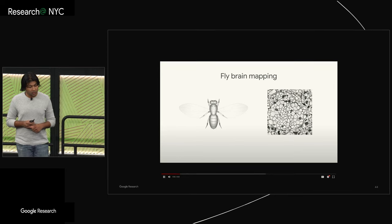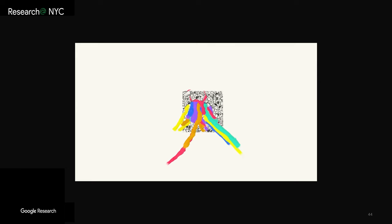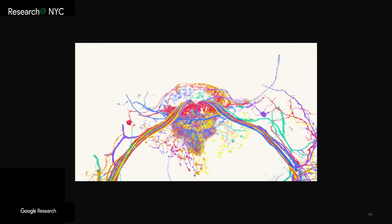These advances in connectomics have changed the field so significantly that neuroscientist Larry Abbott here at Columbia talks about the history of neuroscience as BC versus AC, before connectome versus after connectome.